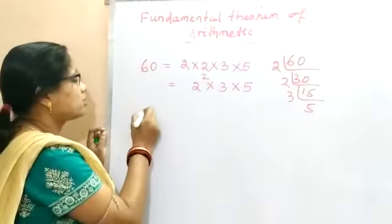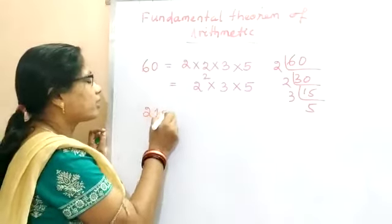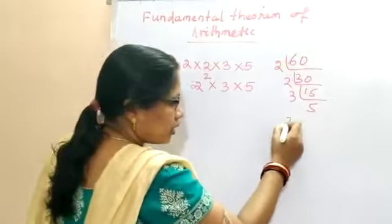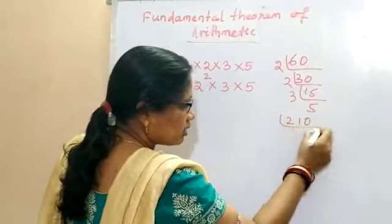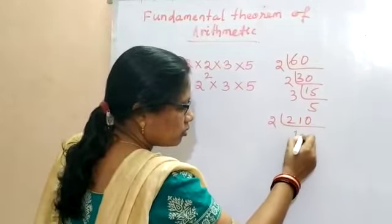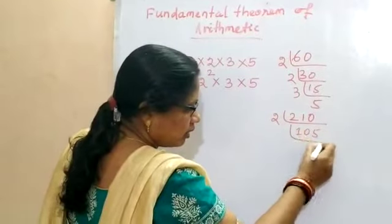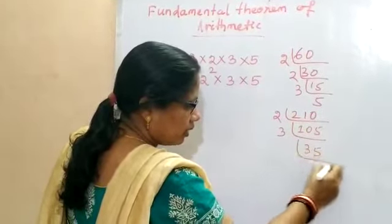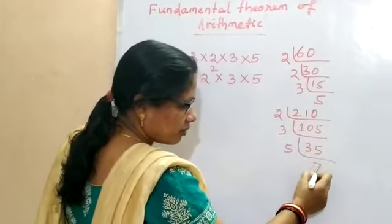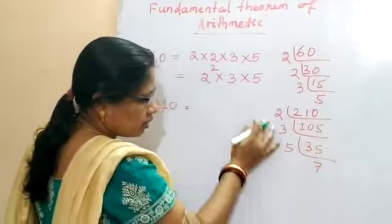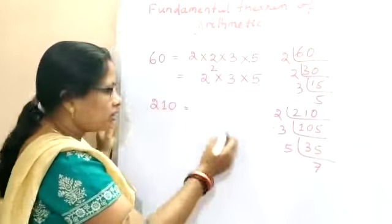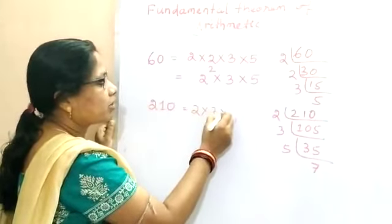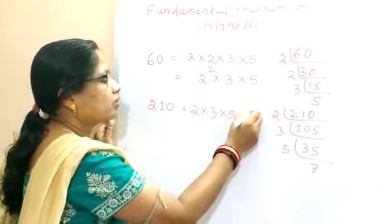Take another example: 210. First it is divisible by 2, then by 3, then by 5, then 7 — and 7 is a prime number. So 210 is equal to 2 × 3 × 5 × 7.